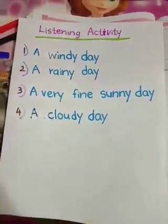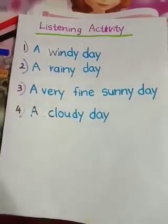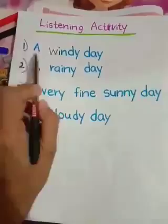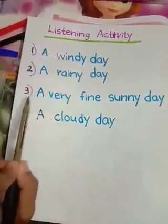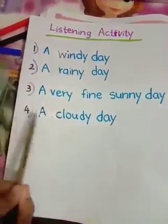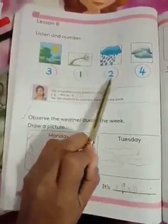This is my second reading - listen and write the numbers in the circles. Number 1 is a windy day. Number 2 is a rainy day. Number 3 is a very fine sunny day. Number 4 is a cloudy day. That's all. Now you can check your numbers: number 1 windy, number 2 rainy, number 3 sunny, number 4 cloudy.